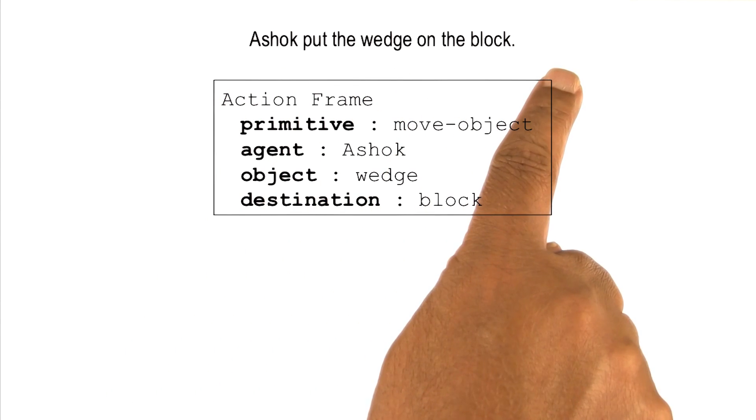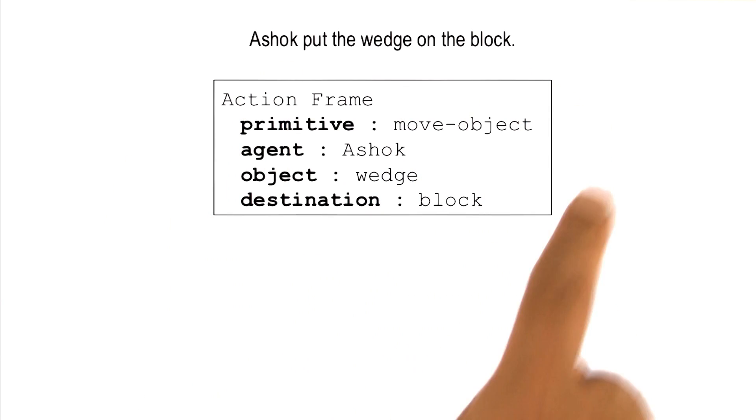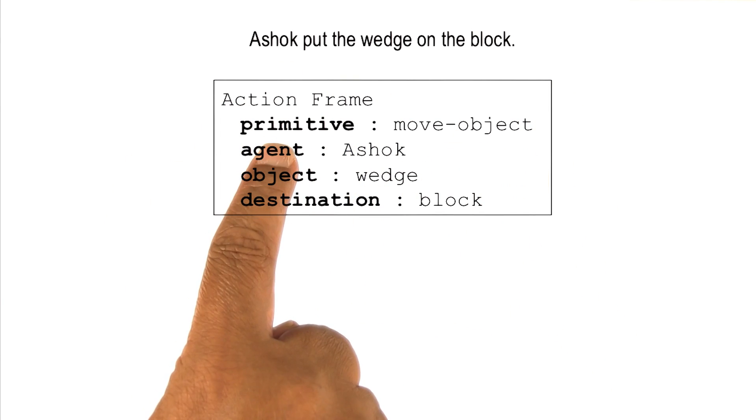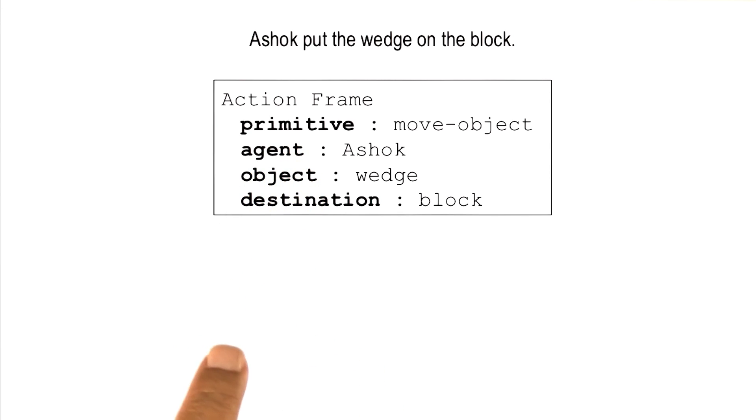Consider this sentence: Ashok put the wedge on the block. Imagine an AI agent that pulls out the frame for move object as a primitive action and fills in all of these slots. And by now we know how the AI agent can do that.